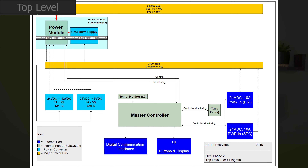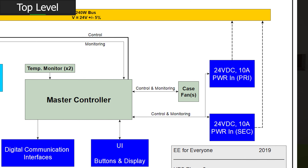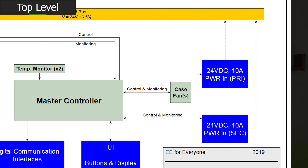If you're looking at the top level of the architecture, this section declares a few key things. First, it decides that there should be a master controller — some sort of programmable device. This controller will have control over the two DC inputs, some case fans, and have some digital interfaces for communication. This diagram also defines the input voltage to the main board: the DC input should be 24 volts while never exceeding 10 amps. Looks like we have about 240 watts to work with on the DC side of things.